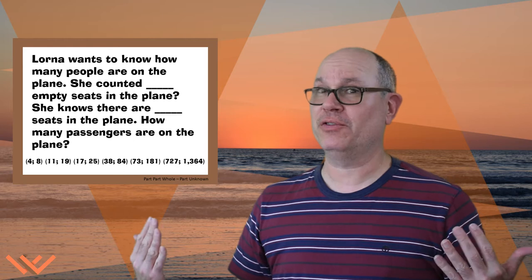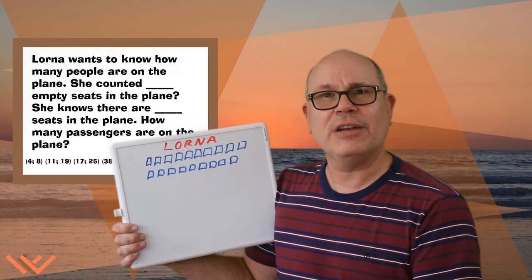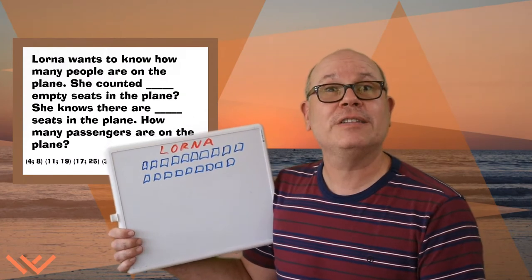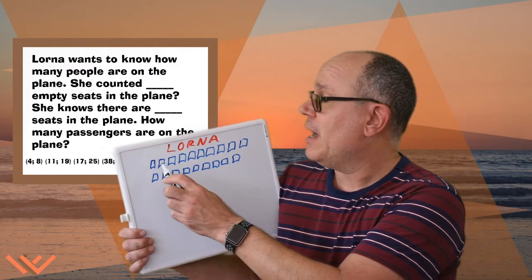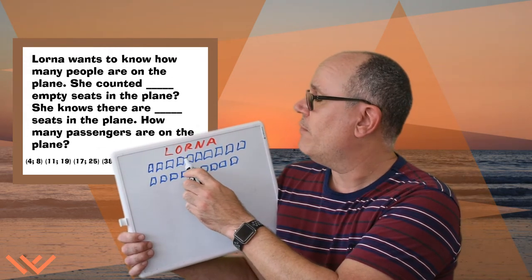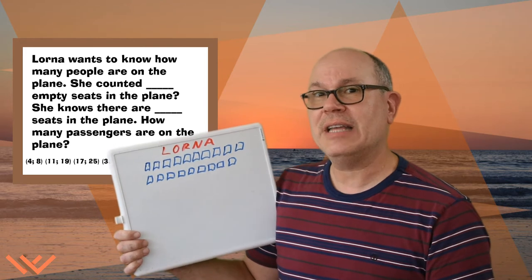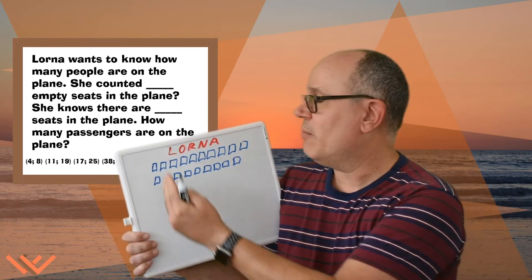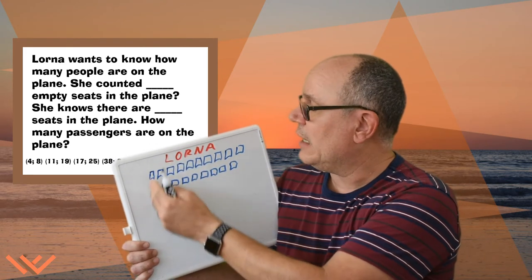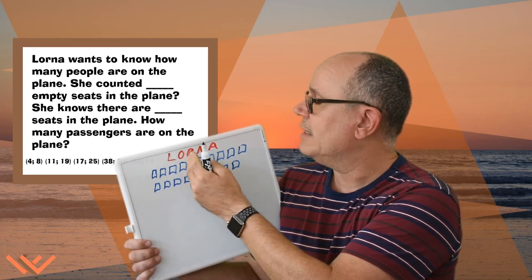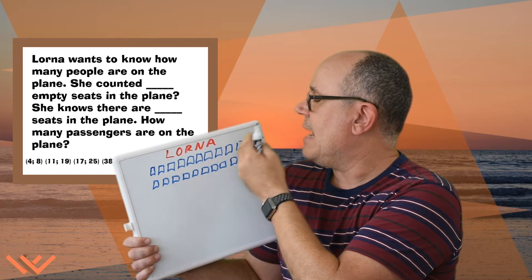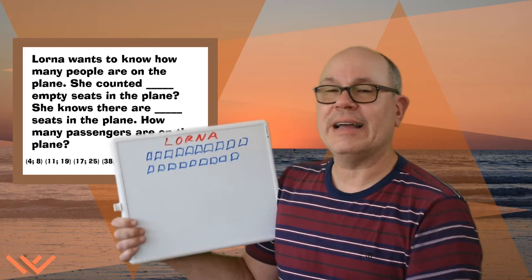As you know, Mr. Woods loves drawing pictures. Let's draw the picture! I didn't draw the entire plane — I just drew the seats. So up here I have 1, 2, 3, 4, 5, 6, 7, 8, 9, 10. I have 10 seats. We can count by 2's now because I have them kind of lined up. So we go 2, 4, 6, 8, 10, 12, 14, 16, 18 — 19 seats.